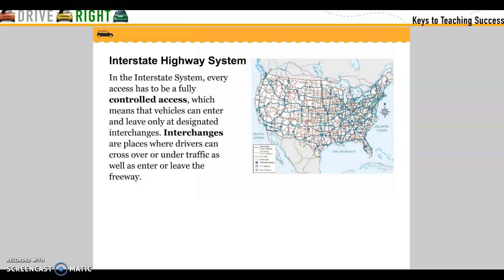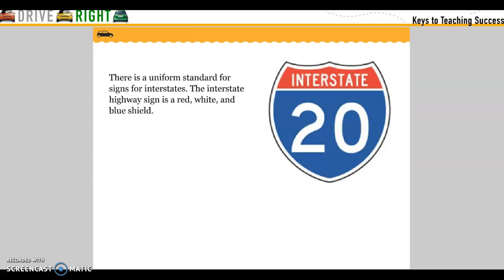Interstate Highway System. In the interstate system, every access has to be a fully controlled access, which means that vehicles can enter and leave only at designated interchanges. Interchanges are places where drivers can cross over or under traffic as well as enter and leave freeways. There is a uniform standard for signs for interstates — the interstate highway sign is a red, white, and blue shield.